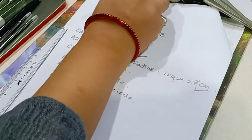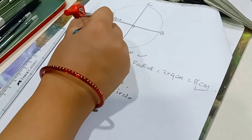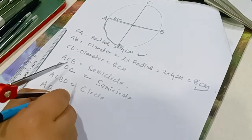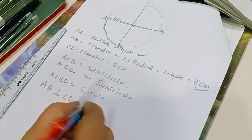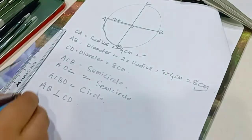And what figure is obtained if the diameters are perpendicular to each other? This diameter AB is perpendicular to CD. What figure is obtained? This is 4 quadrants.